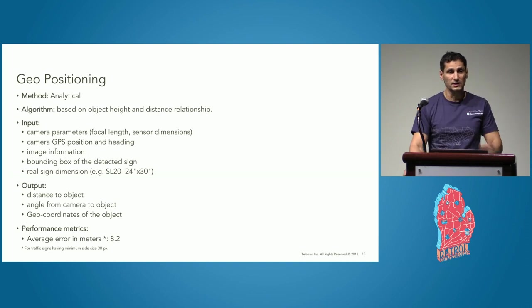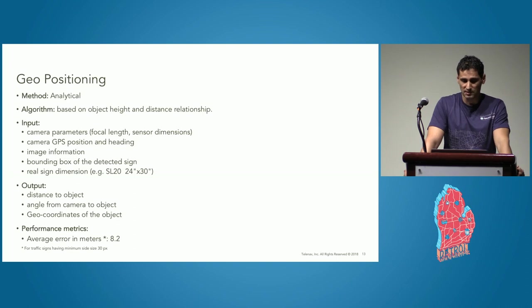We all know that any far-positioned object looks smaller. Using this idea, we calculate the geo-position analytically based on existing relation between object size, the size of the object in the picture, and the distance to the object. This gives the distance. The angle to the object from the car direction can be very easily inferred. Therefore, based on this angle and the distance to the object, the traffic sign can be pretty easily geolocated. Some details about how we do that are on the slide. We can find all input parameters we have used, the output, and the average positioning error.